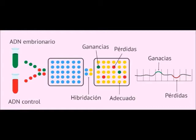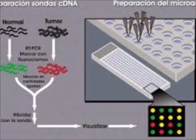Somatic cell hybridization is another molecular technique used to determine the location of genes on chromosomes. It consists of fusing cells of two different species, originating hybrid cells that tend to lose chromosomes when they divide. For example, hybrid cells of human and mouse tend to lose the human chromosomes while the mouse chromosomes are preserved. The presence of retained human chromosomes in the mouse genome makes it possible to assign human genes to specific chromosomes.